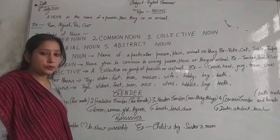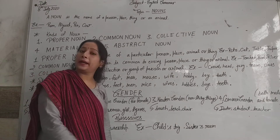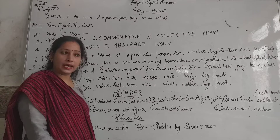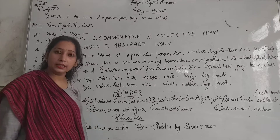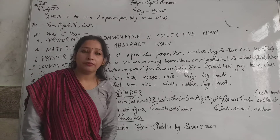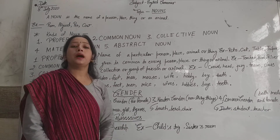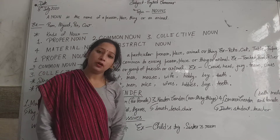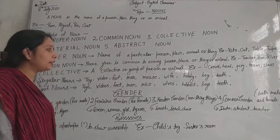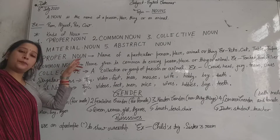A particular city, different countries, different kinds of people — they all have particular names. When something has a unique, specific name, we call it a proper noun.